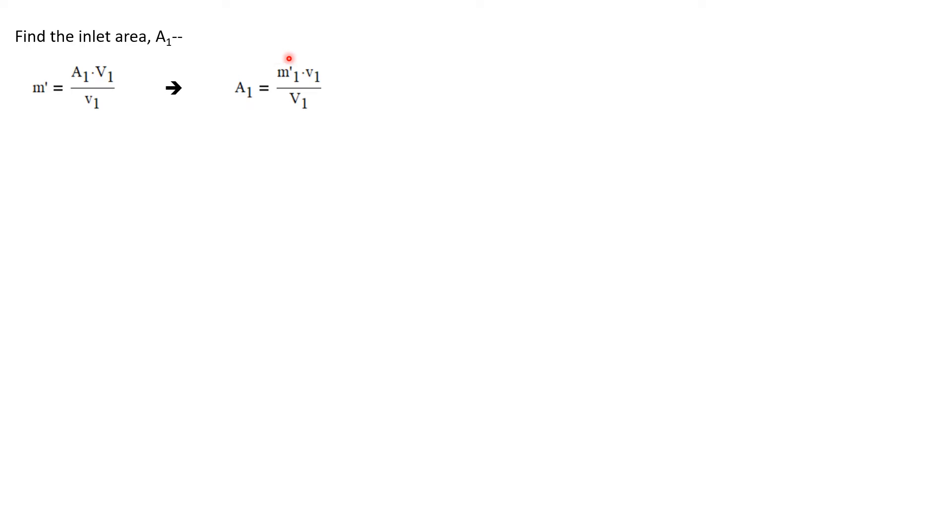Let's start by finding the inlet area A1. We'll use our continuity equation for that. The mass flow rate equals area times velocity divided by specific volume. We can rearrange and solve for the area: it's the mass flow rate times the specific volume divided by the velocity. We can use values from state one conditions. Now we need to find the specific volume using the ideal gas law. So the specific volume is just RT over P, and we'll do this at state one conditions.